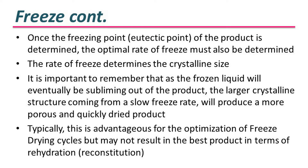Once the freezing point of the product is determined, the optimal rate of freeze must also be determined. The rate of freeze determines the crystalline size. It is important to remember that the frozen liquid will eventually be sublimating out of the product. The larger crystalline structure coming from a slow freeze rate will produce a more porous and quickly dried product. This is typically advantageous for the optimization of freeze drying cycles but may not result in the best product in terms of rehydration or reconstitution.